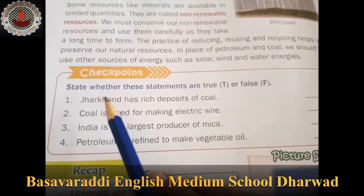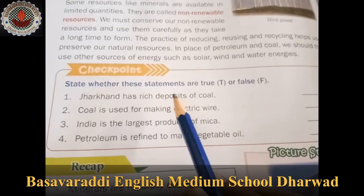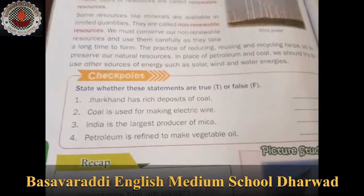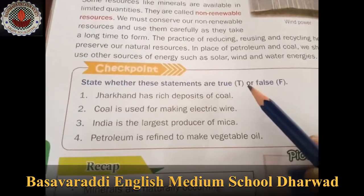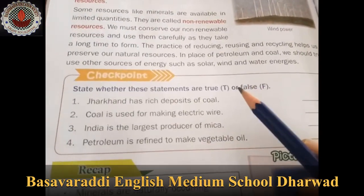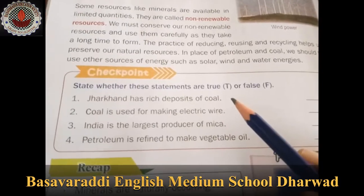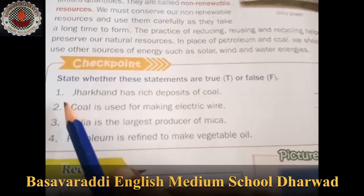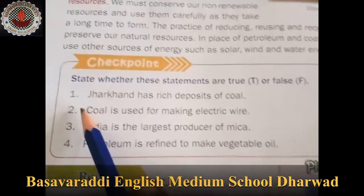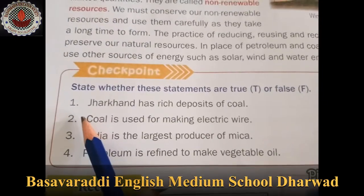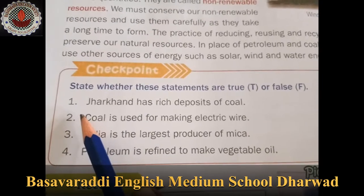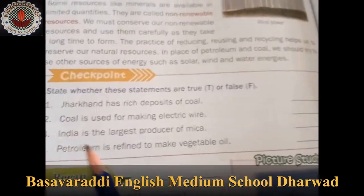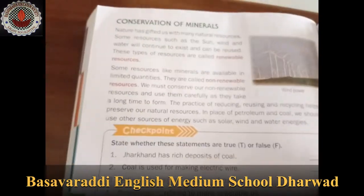State whether these statements are true or false. If the statement is true, we should write T. If the statement is wrong, we should write F in a bracket. Question number 1: Jharkhand has rich deposit of coal. Yes, that is correct — T.